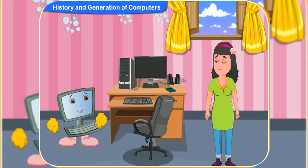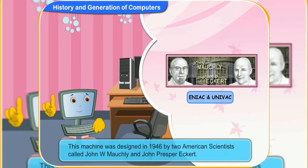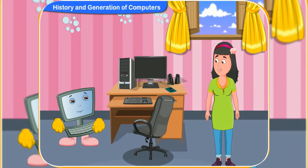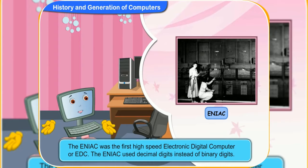Let me now tell you about ENIAC and UNIVAC. ENIAC stands for Electronic Numerical Integrator and Calculator. This machine was designed in 1946 by two American scientists: John W. Mauchly and John Presper Eckert. Unlike earlier machines, the ENIAC used decimal digits instead of binary digits. The ENIAC was the first high-speed electronic digital computer, or EDC.